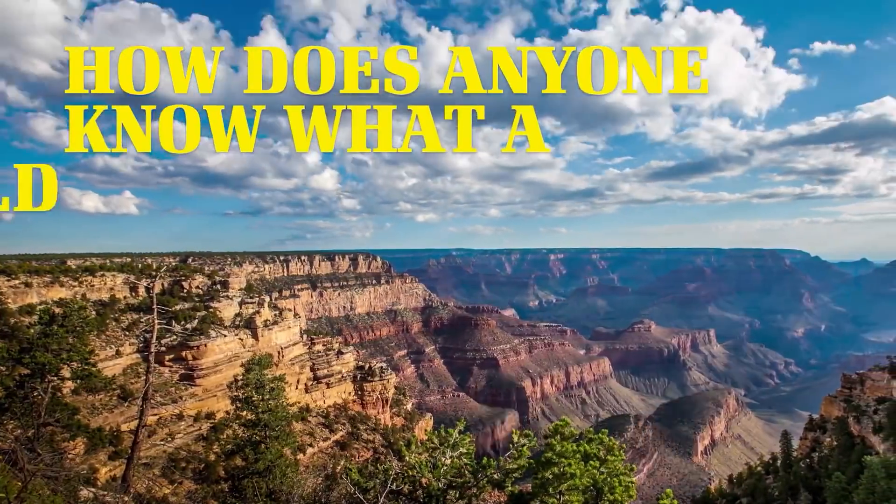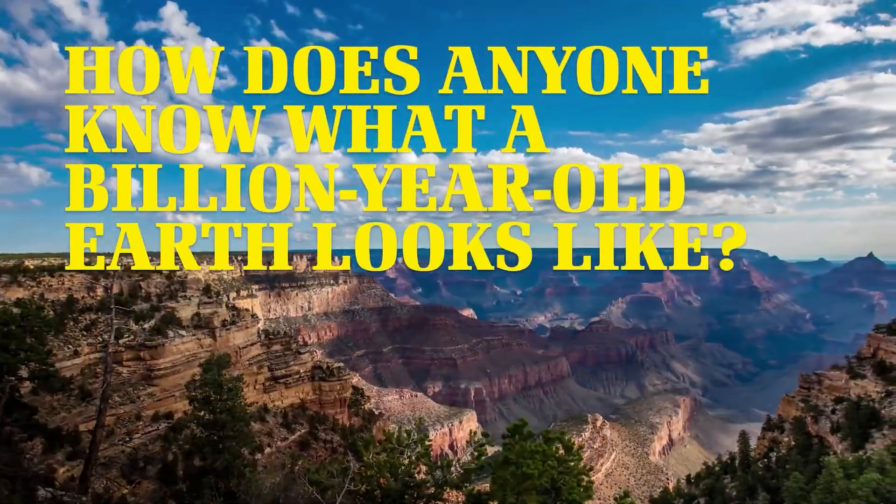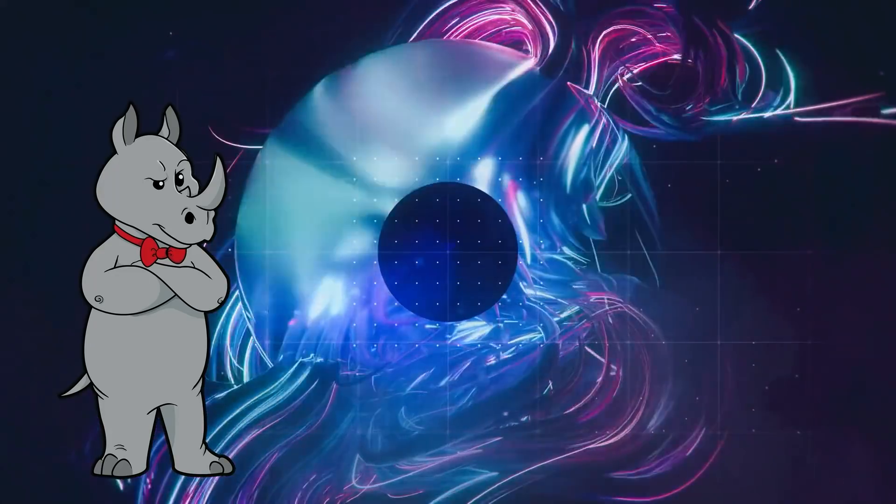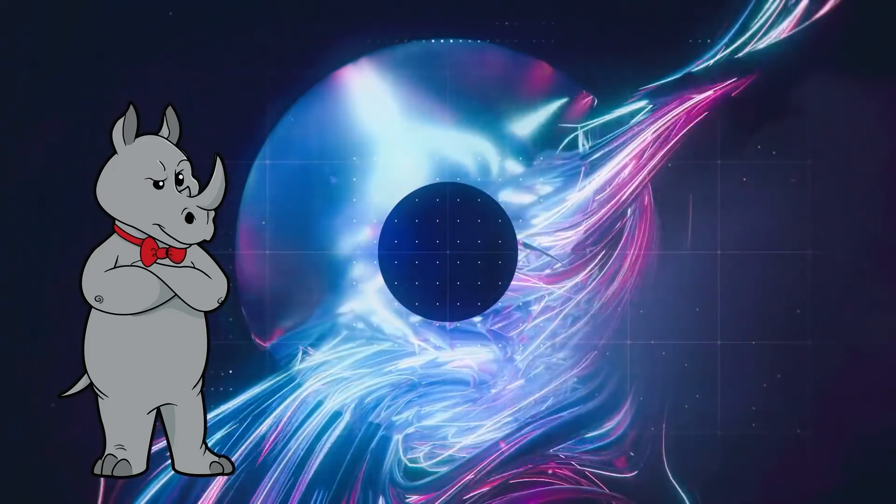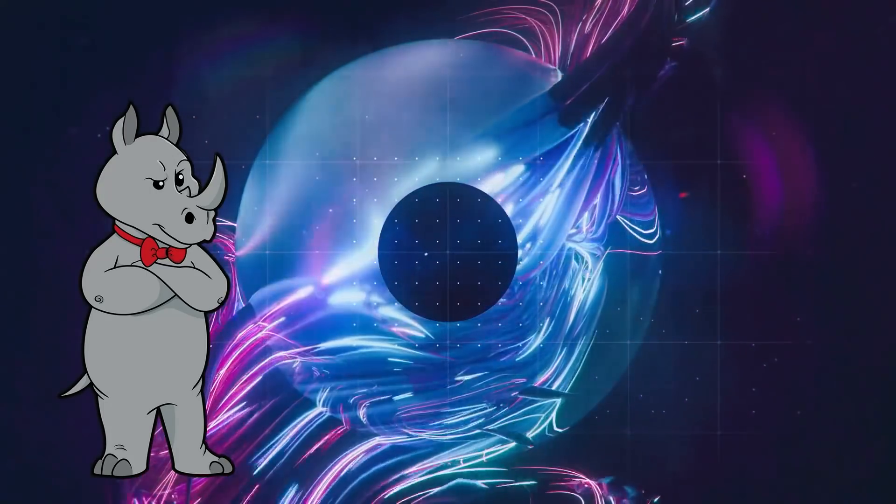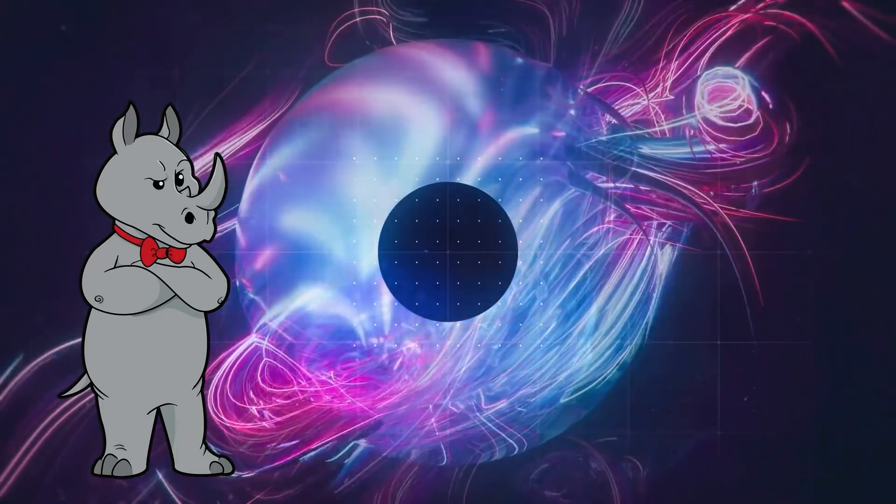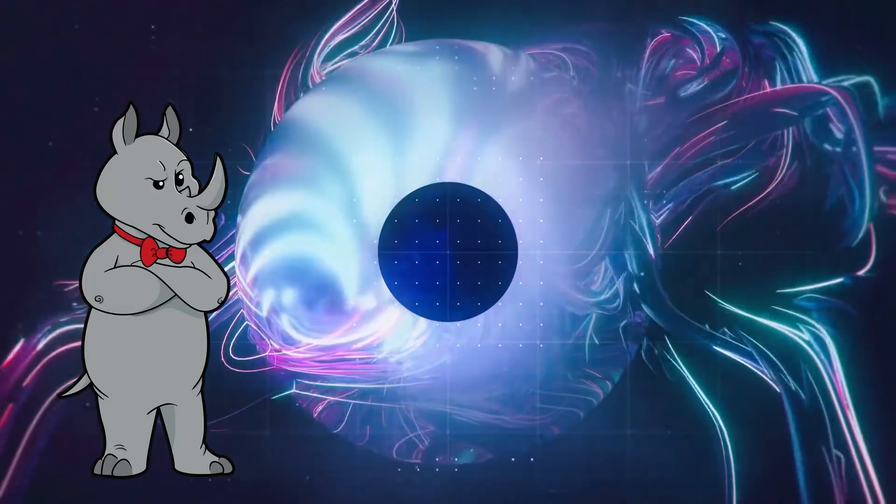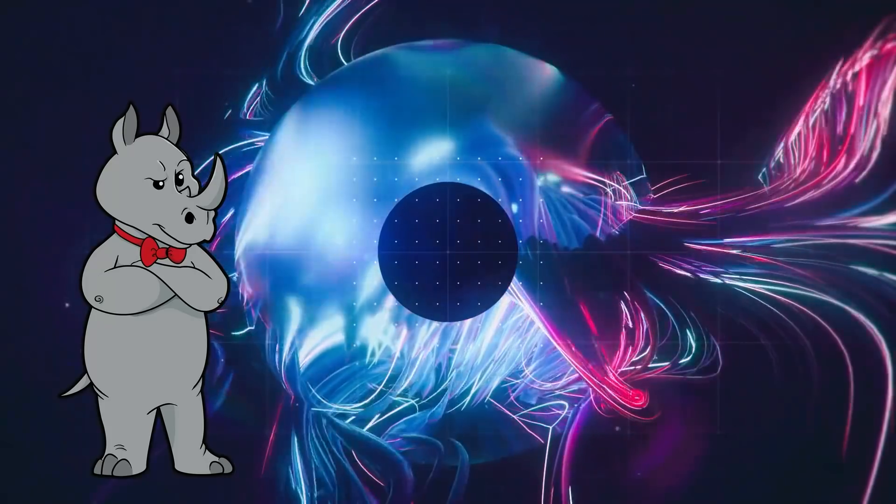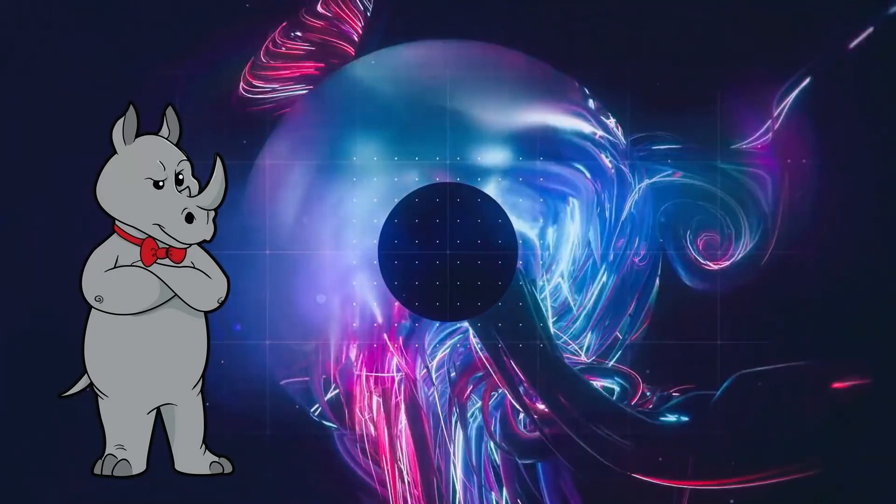But define old. How does anyone actually know what a billion year old Earth looks like? Well, we know the Earth is at least a billion years old because of various dating methods. We can also reconstruct the geologic history of the Earth by examining the rock layers, and absent any radiometric methods, we can calculate approximately how long it would have taken all those layers to form. And it's more than a billion years. So an Earth that is at least a billion years old looks like the Earth that we live on.